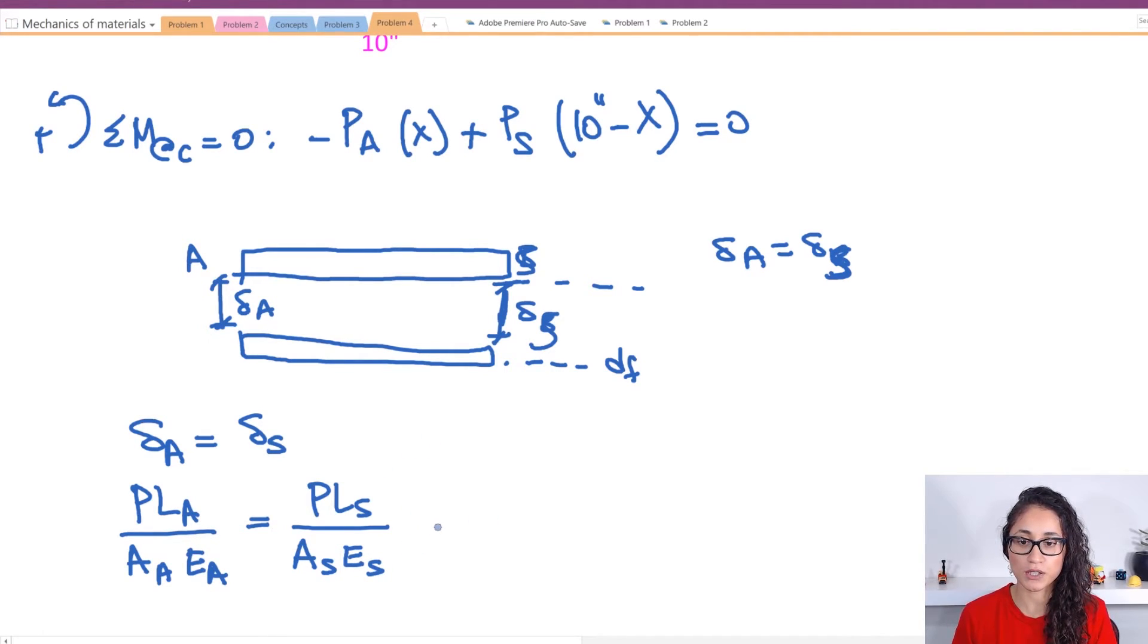So we were given that the length of the rods for the steel and the aluminum are equal. So this cancels. The same thing with the area.